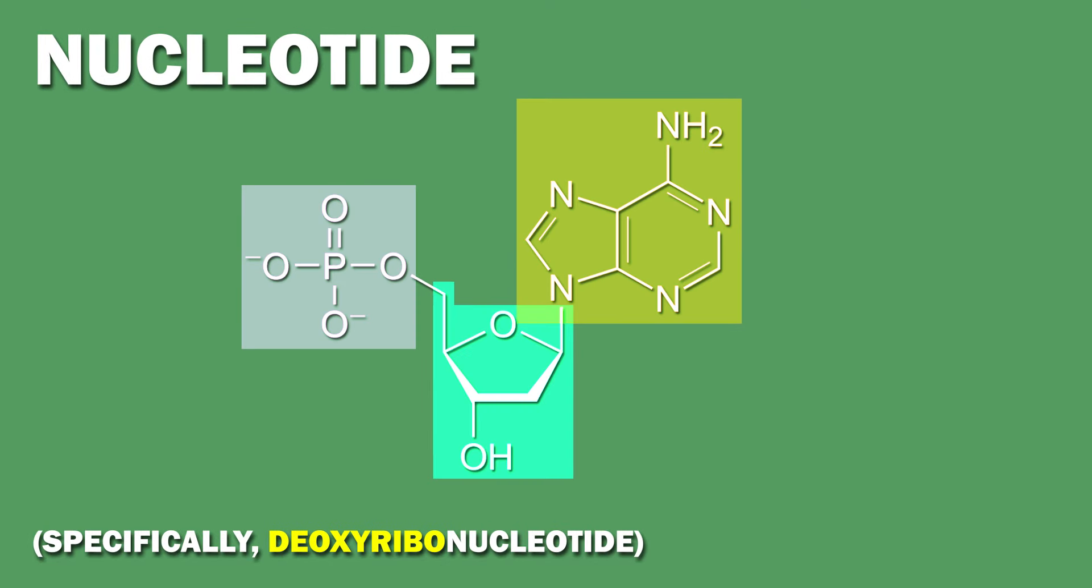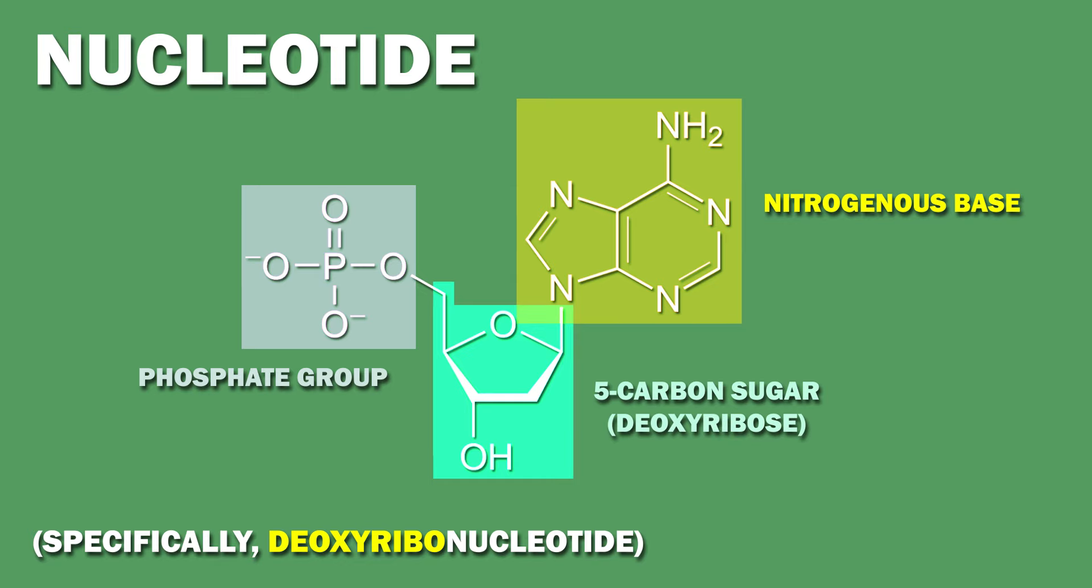A nucleotide has three components: a nitrogenous base, a phosphate group, and a 5-carbon sugar, which for DNA nucleotides is deoxyribose, due to the lack of an oxygen group on one of its carbons.